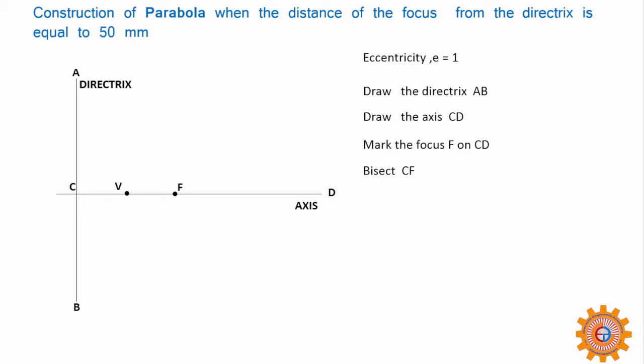Here the eccentricity is VC by VF. VC is 25, VF is also 25, because V is the central point. Now VC by VF, the eccentricity, equals 1.